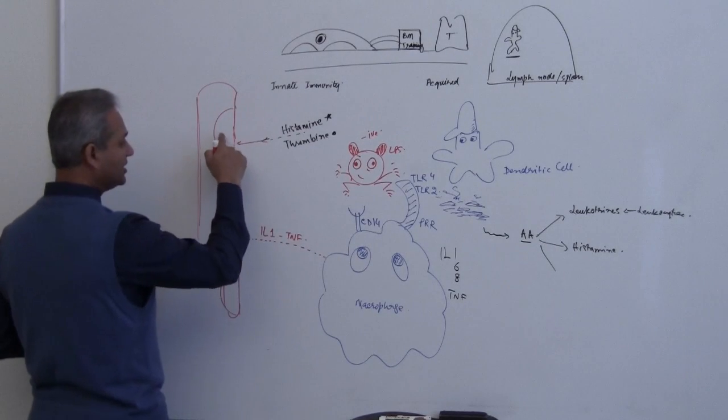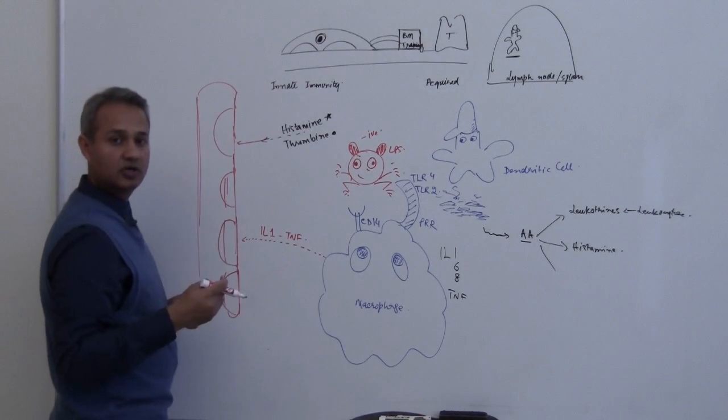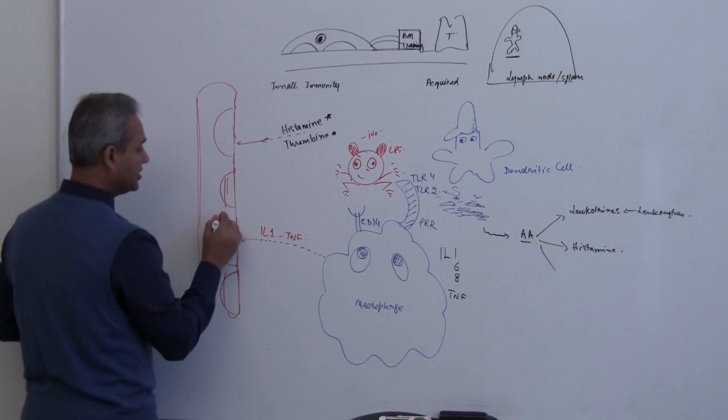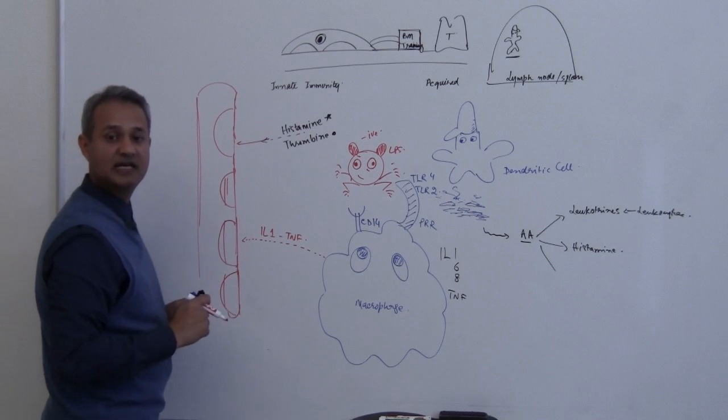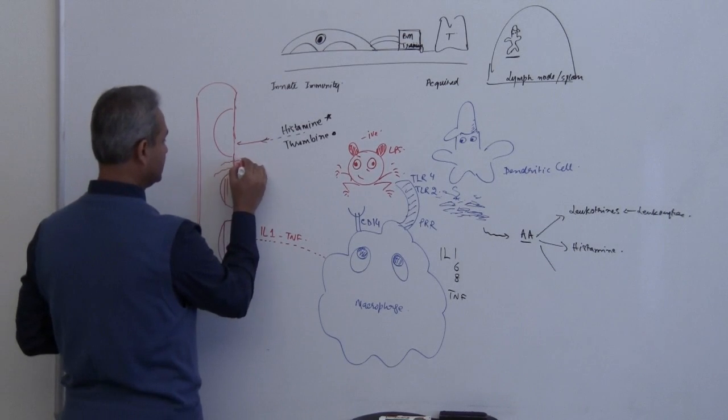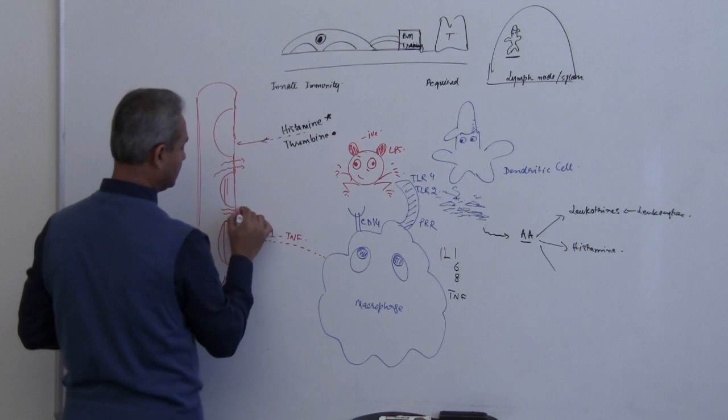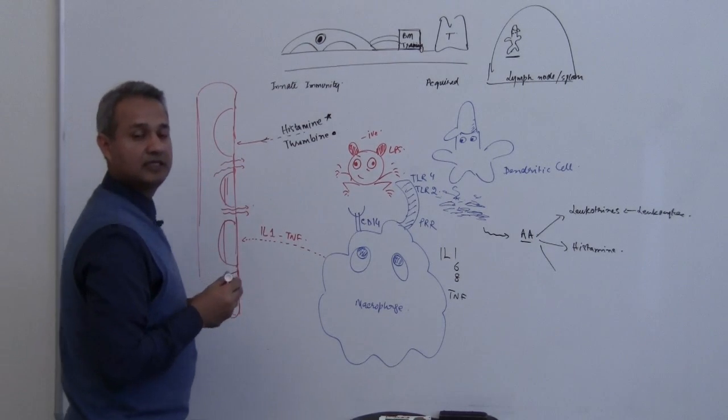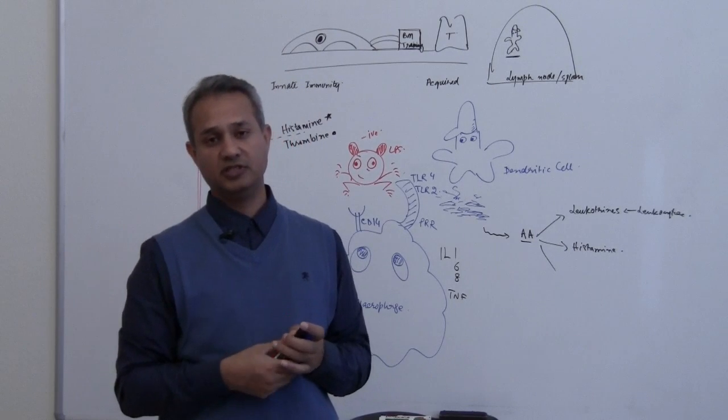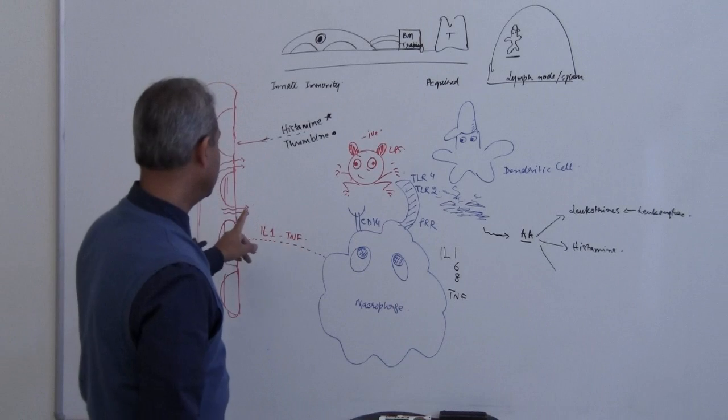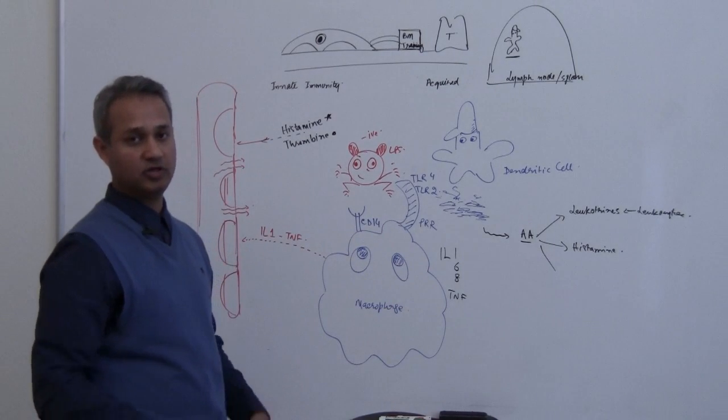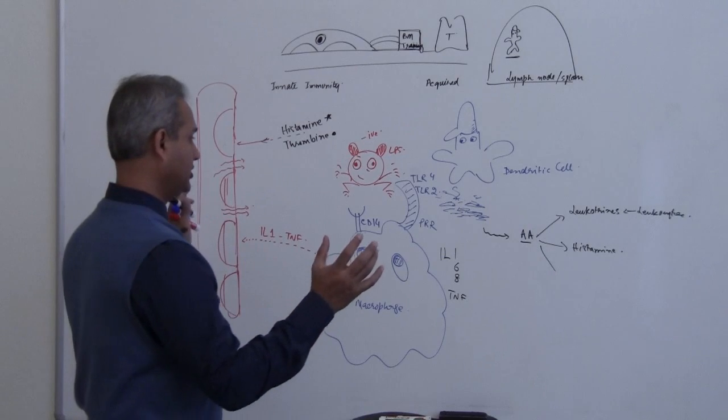So once the endothelial cells become contracted, what will happen is there would appear a gap between these cells. And from that gap, we'll start having substances leaking into the tissue. This is our start of the inflammatory process. This process is then going to help us bring the neutrophils in here and continue with the defense.